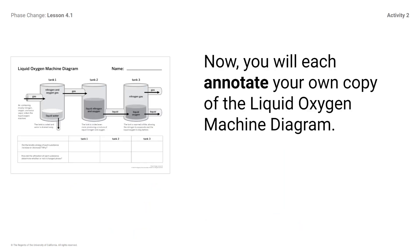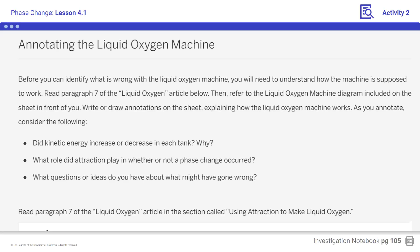Now you will each annotate your own copy of the liquid oxygen machine diagram. You can record notes directly on the diagram or on the table below. Open the liquid oxygen article and read the first two sentences of paragraph 7: 'In the first tank, scientists decrease the temperature enough to condense the water into a liquid — that is, they decrease the kinetic energy of the molecules so the attraction between them can pull the molecules together. The liquid water that forms in the first tank is drained away.' Notice the questions you should consider when annotating the diagram on your student screen. Take about 10 minutes to annotate tanks 2 and 3 on your sheets.